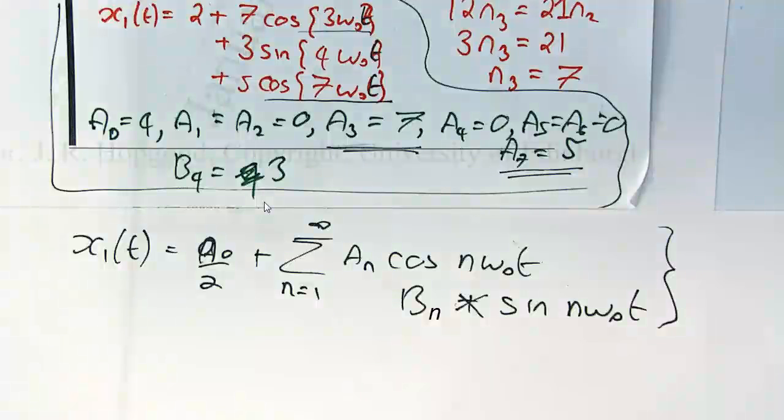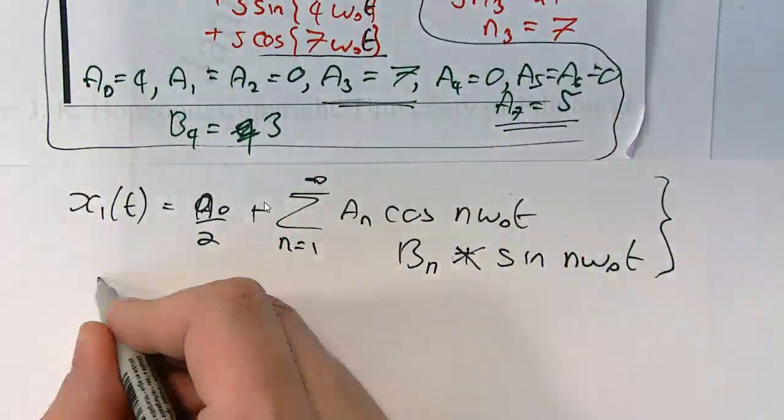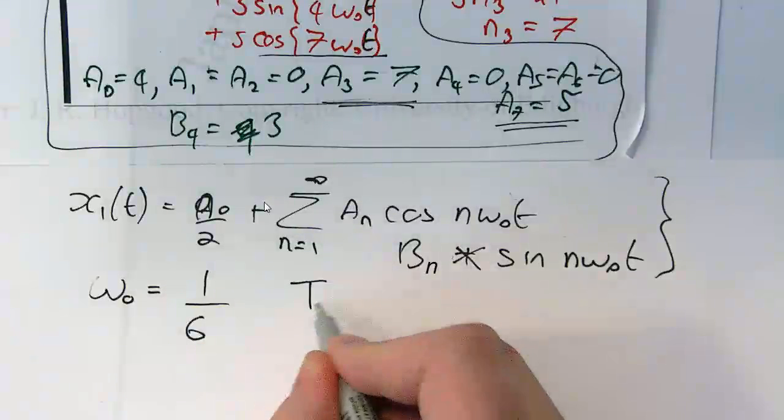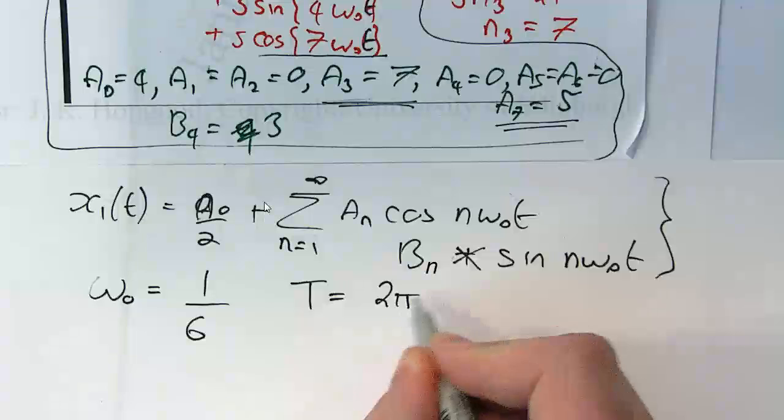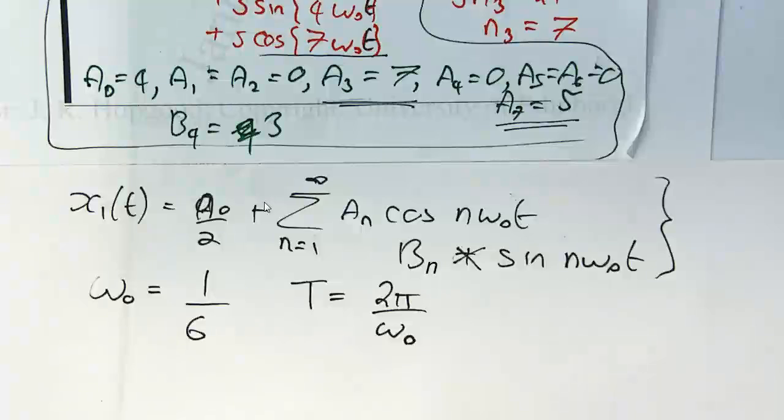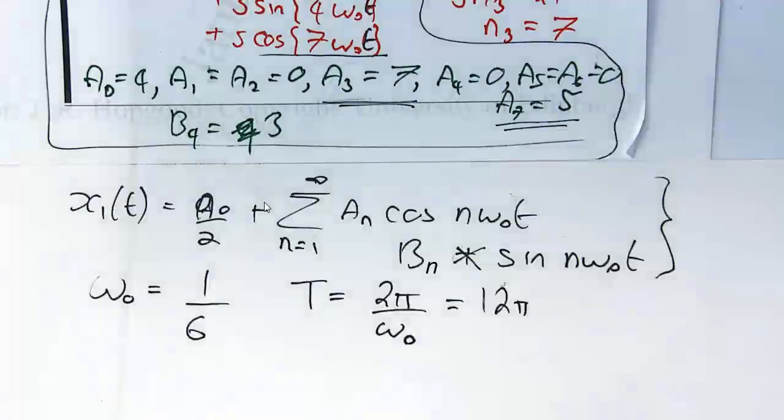Now the question actually said at the top, determine the fundamental period. So I hadn't written that down either. But we had worked out earlier that omega_0 was 6, so the fundamental period, T, is 2π divided by omega_0, because omega_0 is 2π divided by T. So the fundamental period was in fact 12π. So that really was the final answer. I kind of just forgot to mention that on Tuesday.